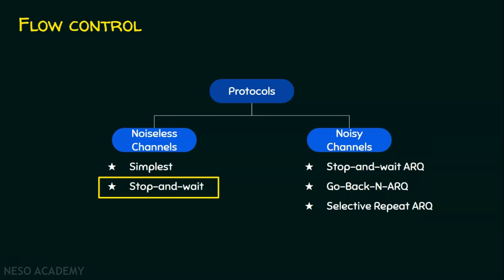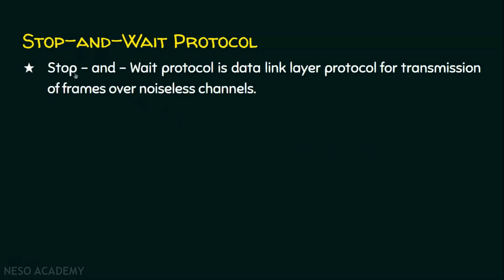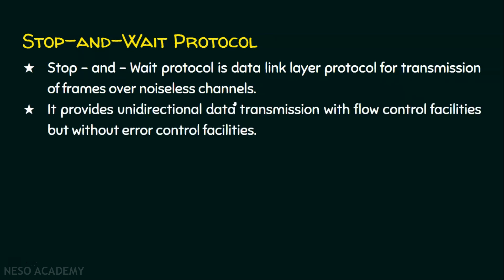Let's start with what is the stop and wait protocol. The stop and wait protocol is a flow control protocol, where flow control is one of the services of the data link layer. It is a data link layer protocol for transmission of frames over noiseless channels. It provides unidirectional data transmission with flow control facilities, but will not focus on any error control facilities. Unidirectional data transmission means either sending or receiving will take place at a time — both will not happen simultaneously.